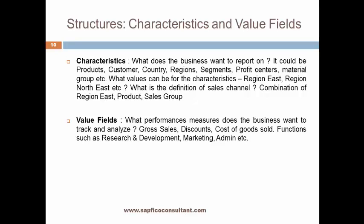Characteristics and value fields: when configuring profitability analysis for a business, the questions you should be asking are: what do you want to report on? It could be product, customer, country, region, segments, profit center, or material group. What values can the characteristics have — for example, region east, region northeast, etc.? What is the definition of a sales channel — for example, a combination of region east, product, and sales group? For value fields: what performance measures does the business want to track and analyze? Typically it is gross sales, discounts, and cost of goods sold.